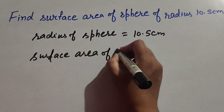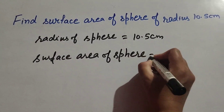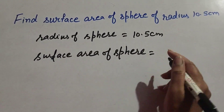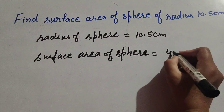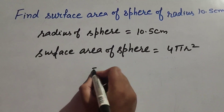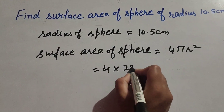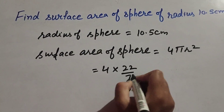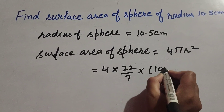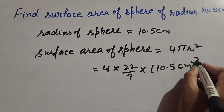We know the formula to find the surface area of a sphere: it is equal to 4πr². Here, 4π is constant with value 22 over 7, and r is the radius, which is 10.5 cm, squared.